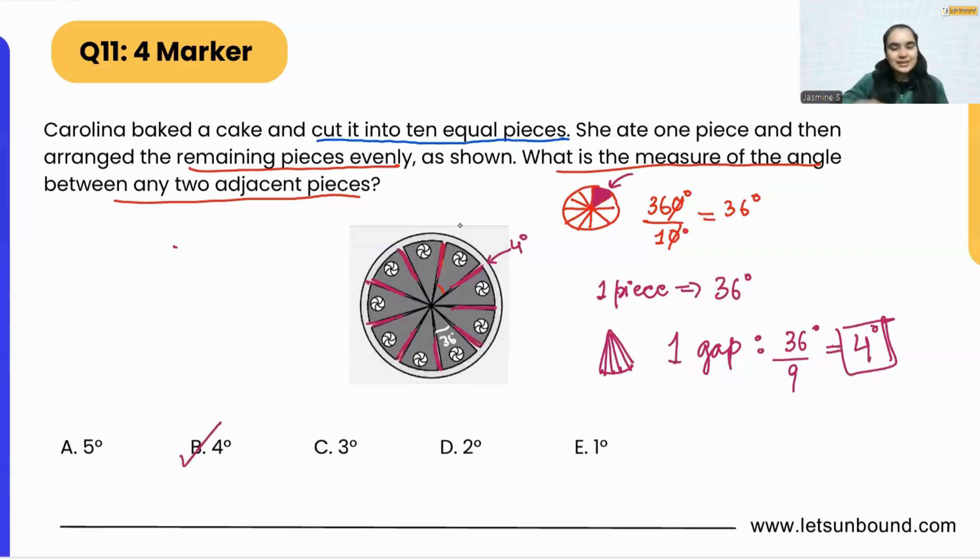I hope you enjoyed watching this video. It was a pretty easy question. Step number one: we know that the entire circle will be 360 degrees. We split it into 10 pieces, so each piece will be 36 degrees. That one piece has now been split into nine parts, so 36 divided by 9 is 4 degrees. That is how we got the answer.